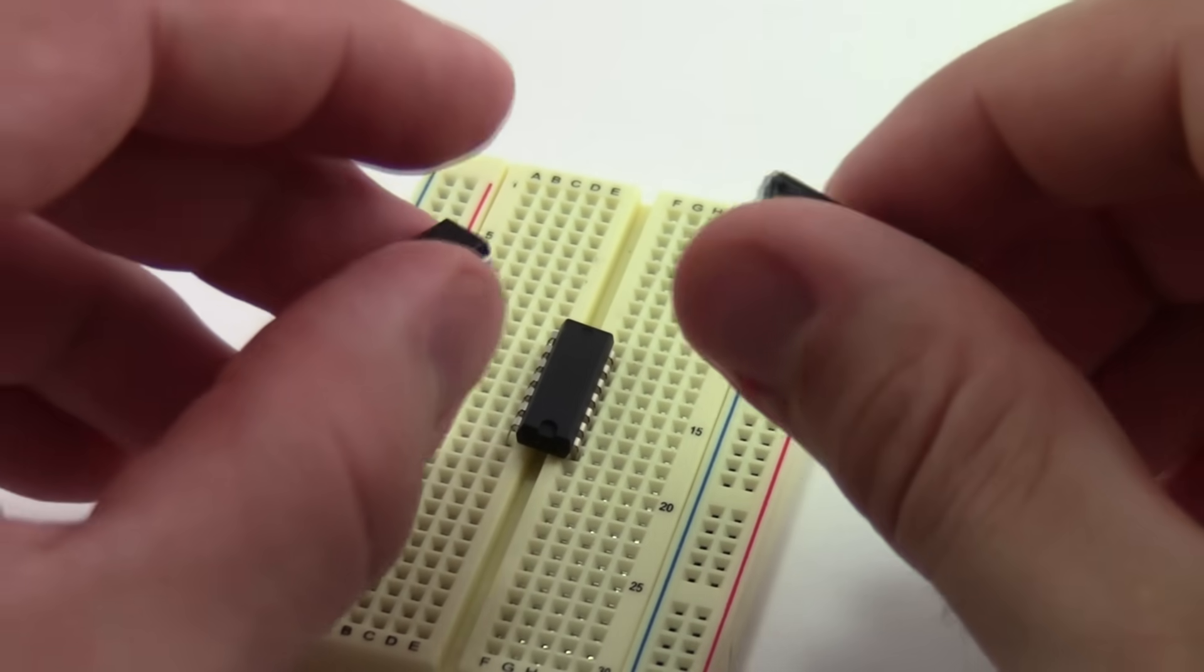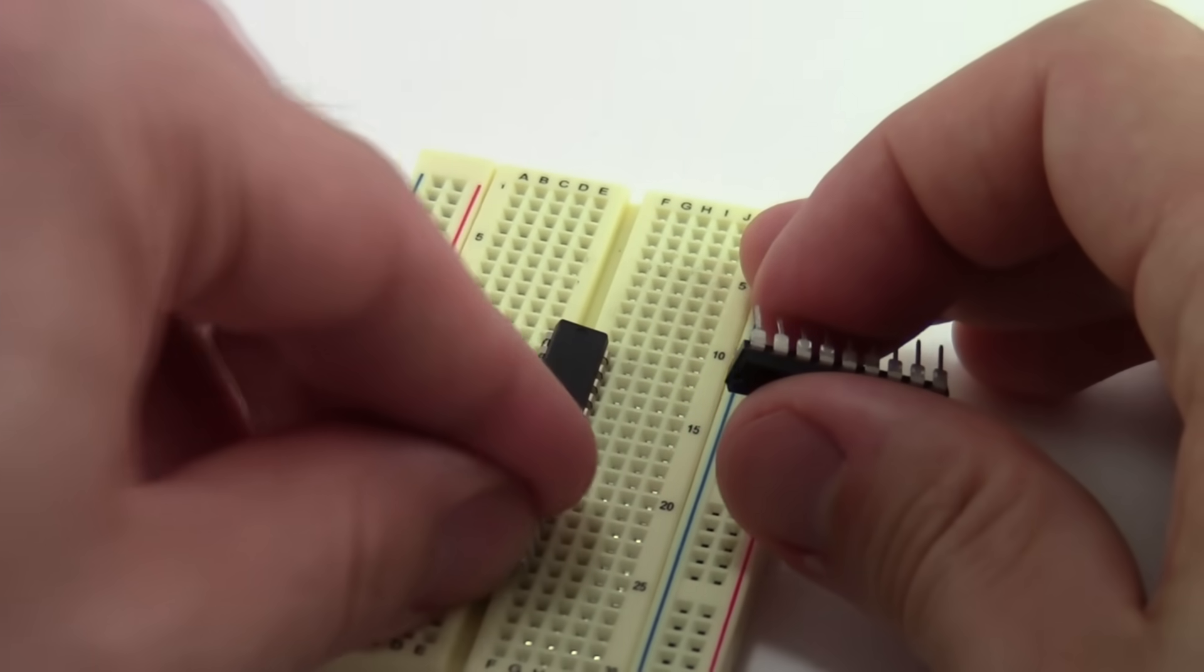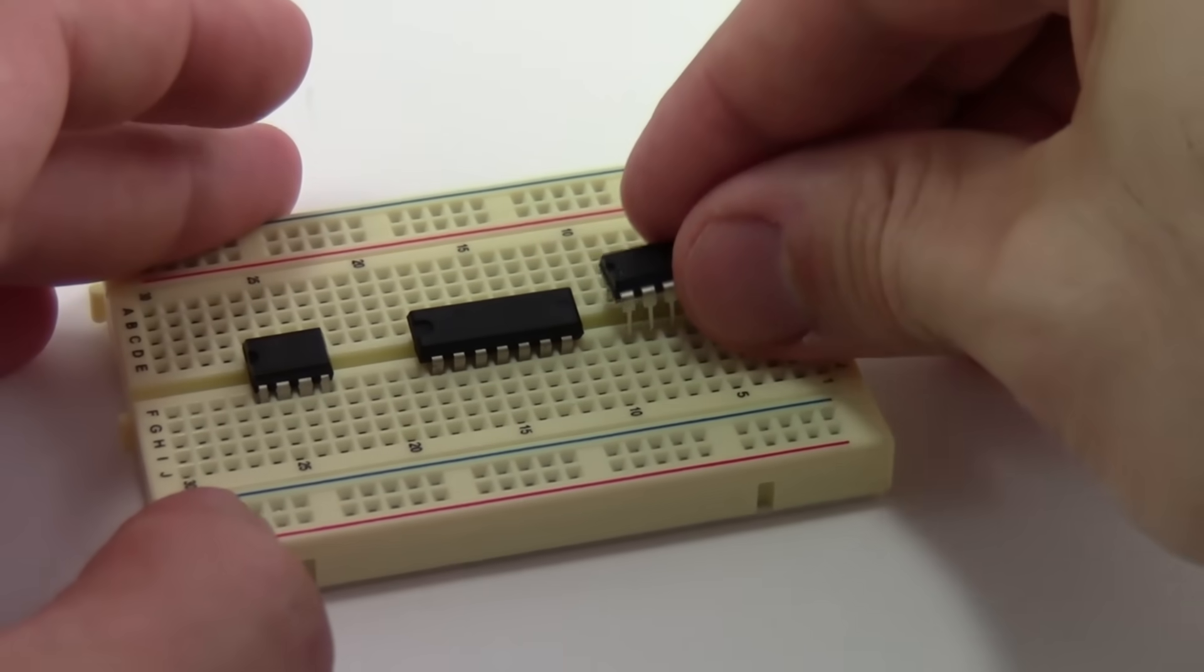Integrated circuits come in many different sizes and they all serve a special purpose. However, all of them will fit directly into a breadboard straddling this middle gap.